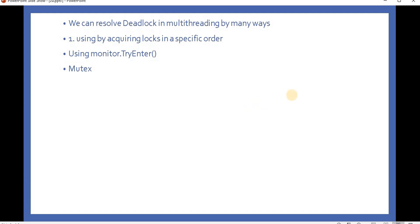For resolving a deadlock in a program, there are many ways we can do it. We can use acquiring locks in a specific order — that is the first way. We can also use Monitor.TryEnter and Mutex. All these things we have already discussed in our previous videos.